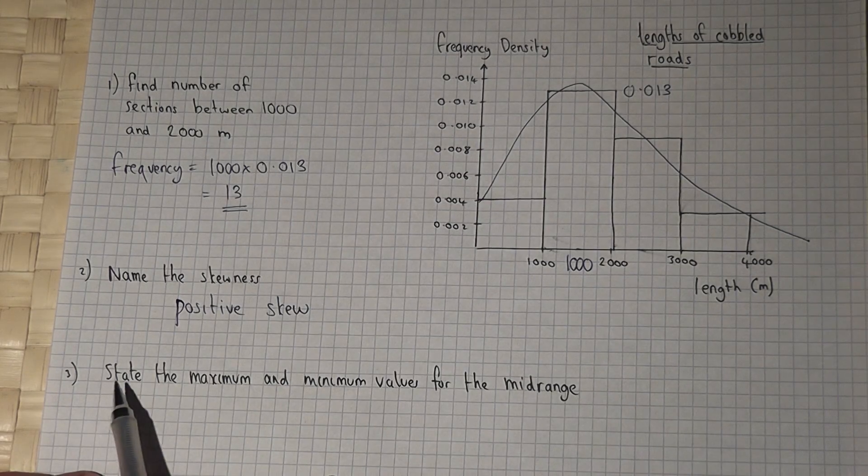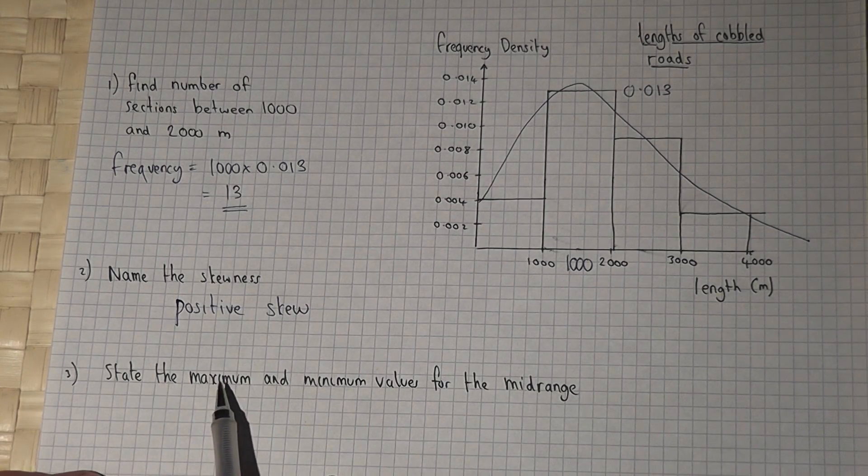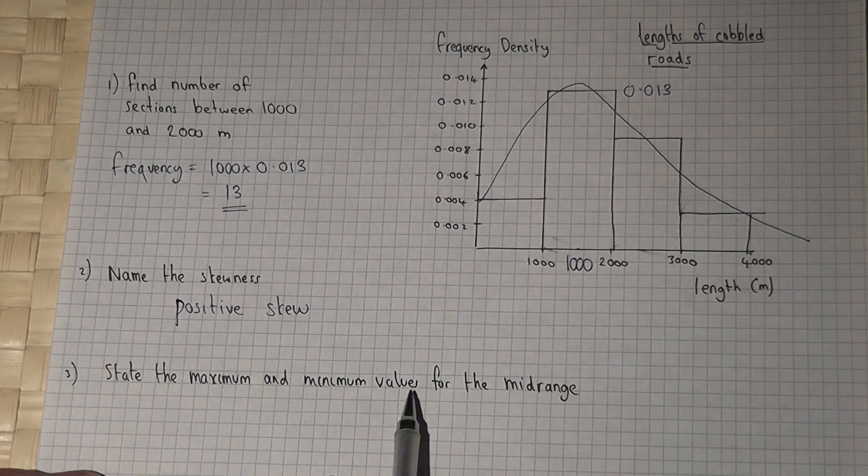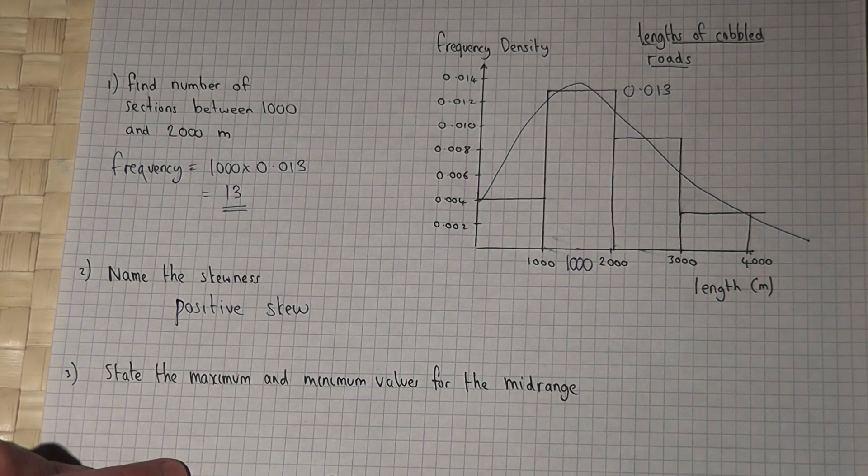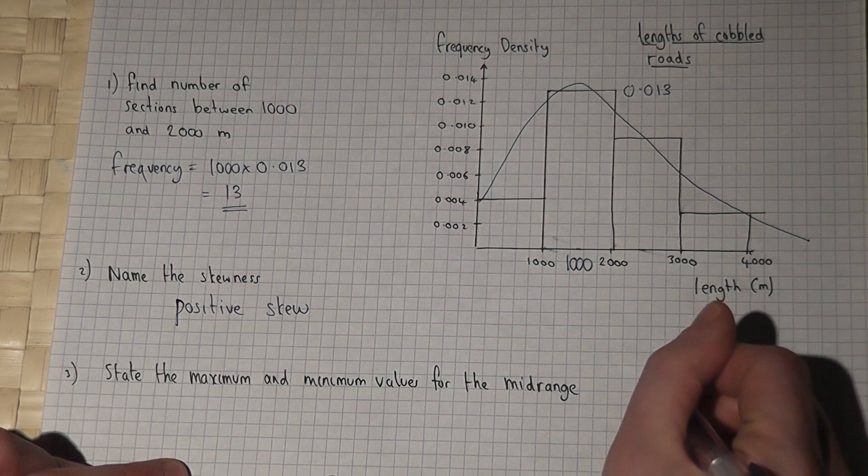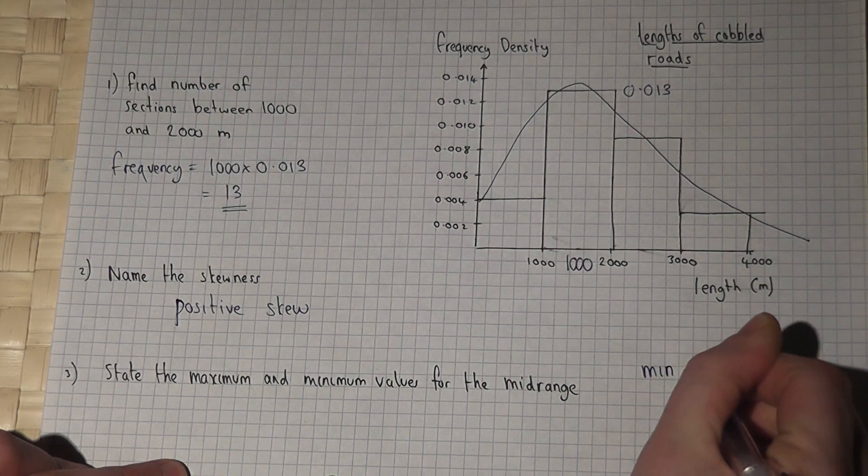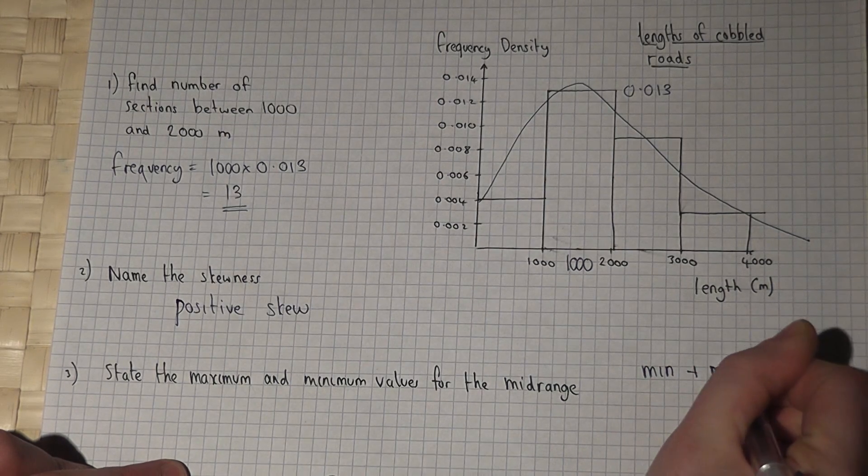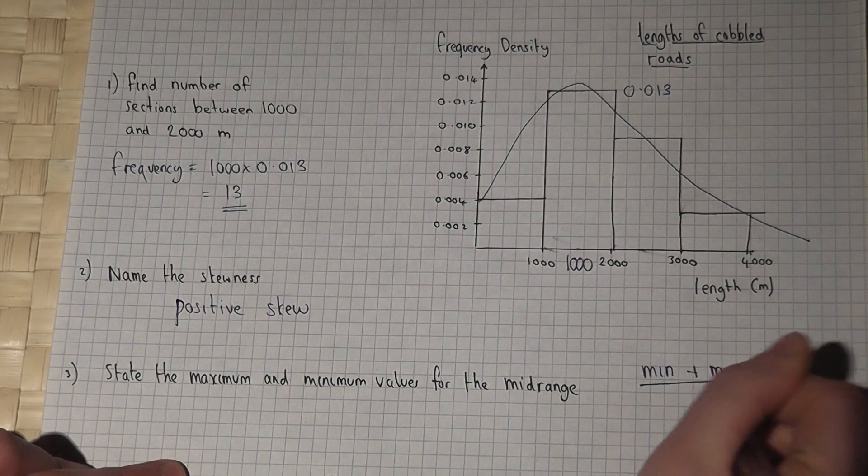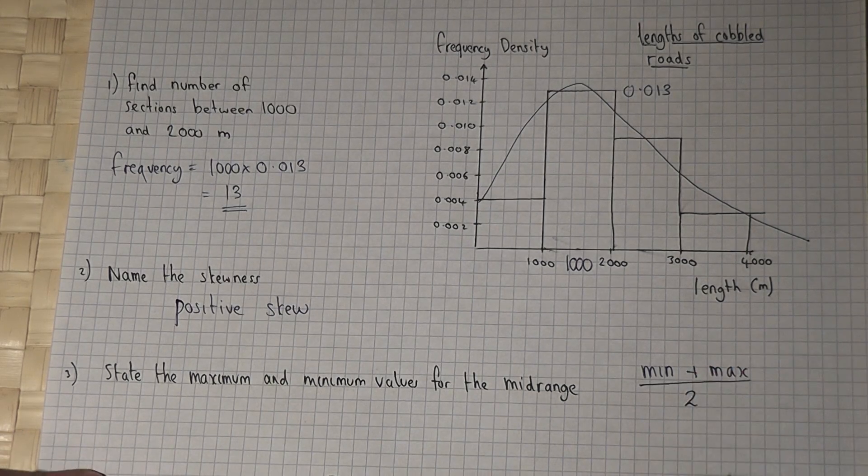Part three asks to state the maximum and minimum values for the mid-range. The mid-range is the minimum plus the maximum, all divided by 2.